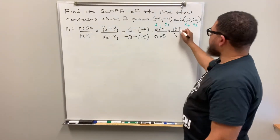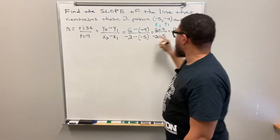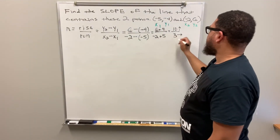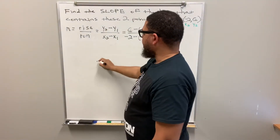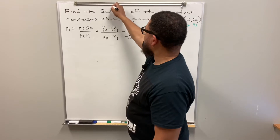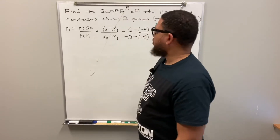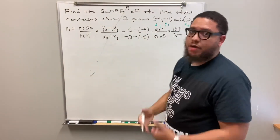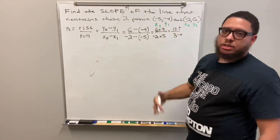If I were using this slope to graph and draw a line, I could start at any point on the line. The positive ten means I rise up ten spaces, and the positive three in the denominator — my run — means I move to the right three spaces. So from my starting point I go up ten spaces, then over three spaces to get the next point, and I draw a line through those points.